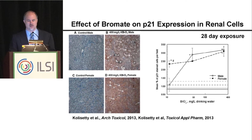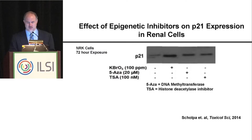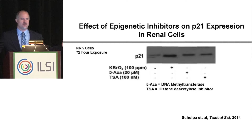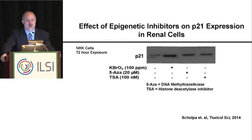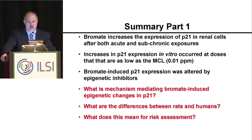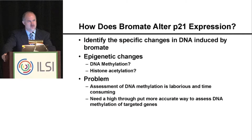We do see a difference between male and female as well, so yes, it happens in vivo. If we treat with bromate we see an increase in P21. If we inhibit DNA methyltransferases, it goes down. If we inhibit HDACs — histone deacetylases — it also goes down. This was our evidence for the first summary: bromate increases the expression of P21, and these effects occurred at doses in vitro as low as the MCL. The molecular biologist in me was excited; the toxicologist in me said to pump the brakes.